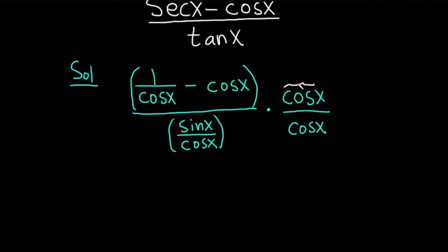We're going to take this cosine and multiply it by both terms. Cosine x times 1 over cosine x times cosine x is just 1, so you can put 1 here, minus, and then cosine times cosine is cosine squared.